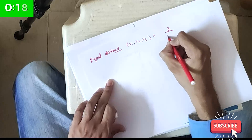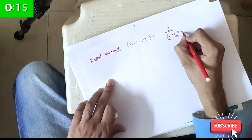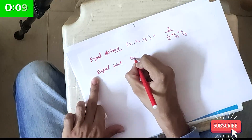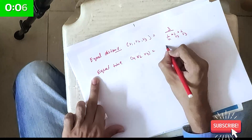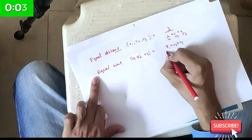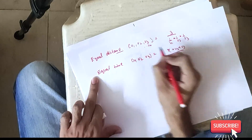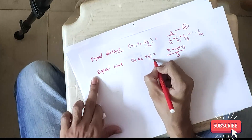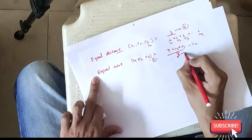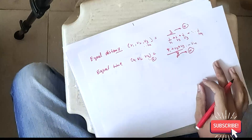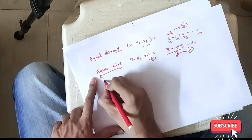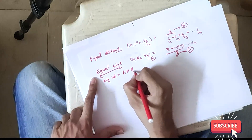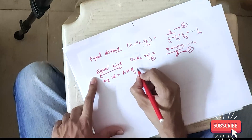If there are three equal time intervals with velocities v1, v2, v3, the average velocity is (v1 + v2 + v3) / 3. For n equal time intervals it becomes (v1 + v2 + ... + vn) / n. In short: when there is equal time, average velocity is the arithmetic mean of velocities.